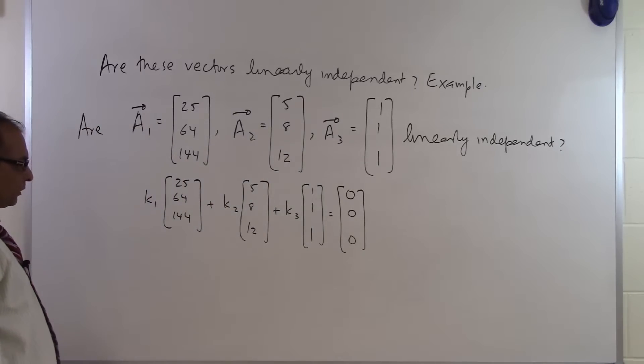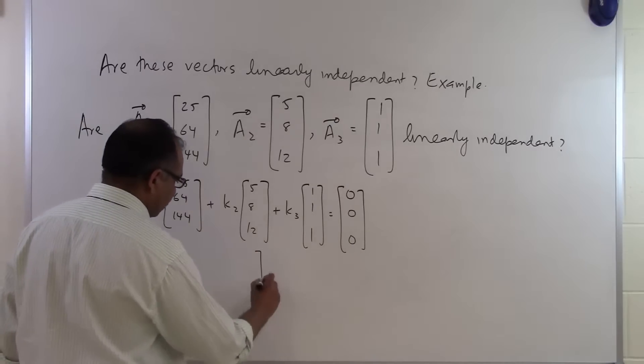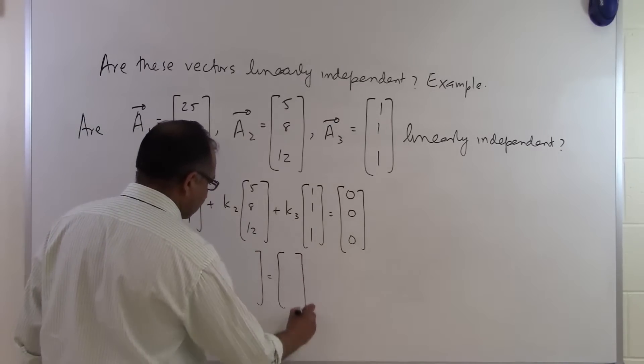Then you can very well see that you are going to get three equations, three unknowns. So you will have, let us go ahead and write this down. So you are going to get this equal to 0, 0, 0.